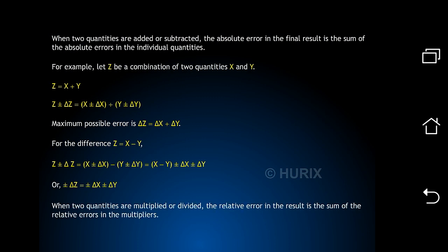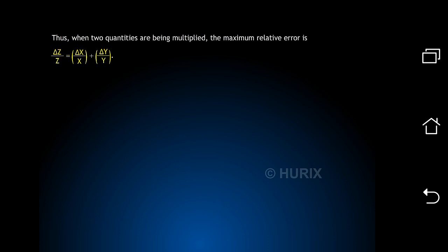When two quantities are multiplied or divided, the relative error in the result is the sum of the relative errors in the multipliers. Thus, when two quantities are being multiplied, the maximum relative error is delta Z by Z equals delta X by X plus delta Y by Y.